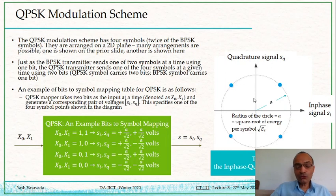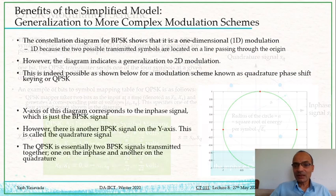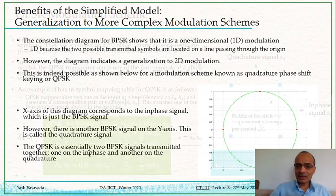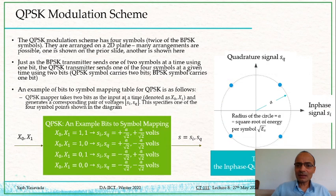When you have four constellation points arranged on a plane, there are many different possible arrangements. One scheme has the four constellation points at 0, 90, 180, and 270 degrees, whereas another scheme has them at 45, 135, 225, and 315 degrees.